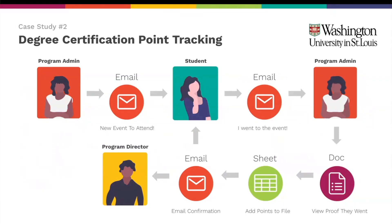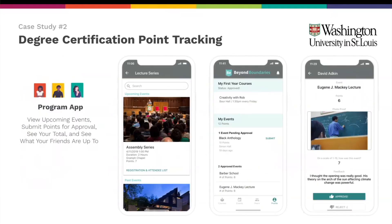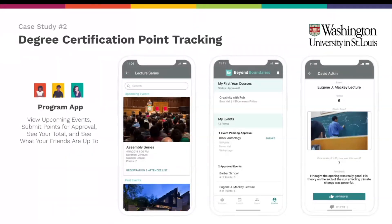Students would often lose track of how many points they had or where they needed to go, and the admin struggled to check who was on track. The Adalo app gave students a view showing upcoming events, total points, and pending points awaiting approval — they could submit proof of attendance directly in the app for approve or reject. It happened across two apps: the admin app and the student app. There was even a social element where students could see who else was going to an event, creating a gamified leaderboard that made the whole program more engaging.